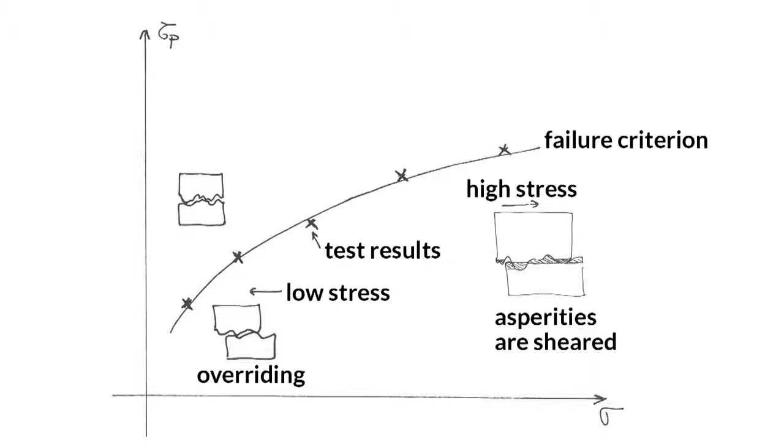Under low confinement, the walls tend to override while at high confinement, the asperities tend to be sheared off.